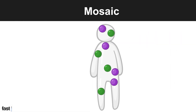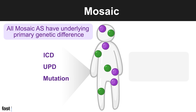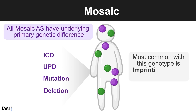All individuals living with mosaic AS have a primary underlying genetic difference, such as ICD, UPD, mutation, or deletion. The most common genetic change with this genotype is ICD, or imprinting center defect, caused by an error in the imprinting center.